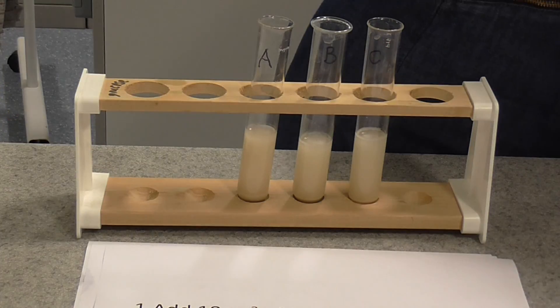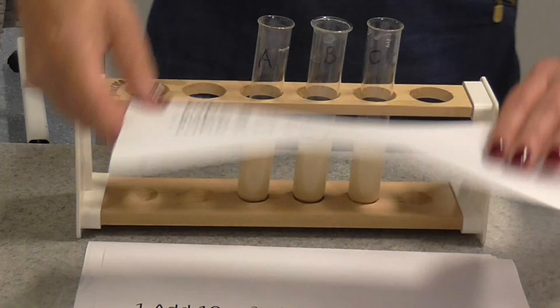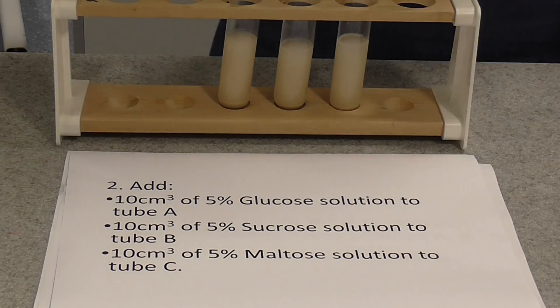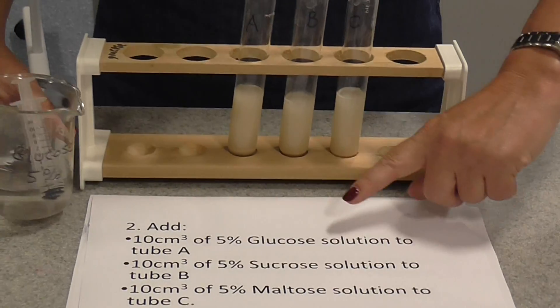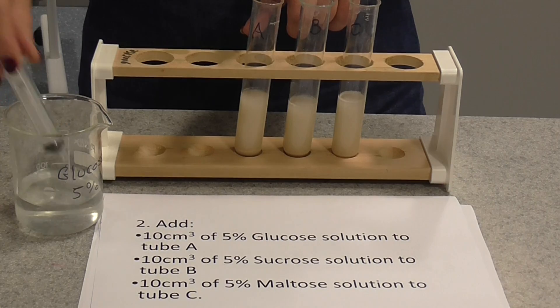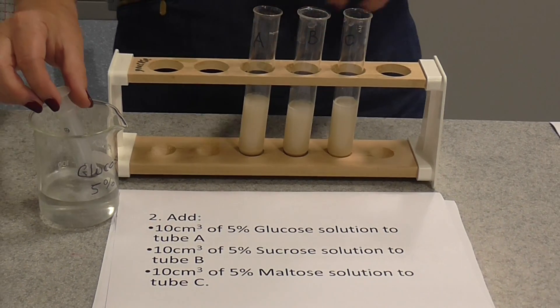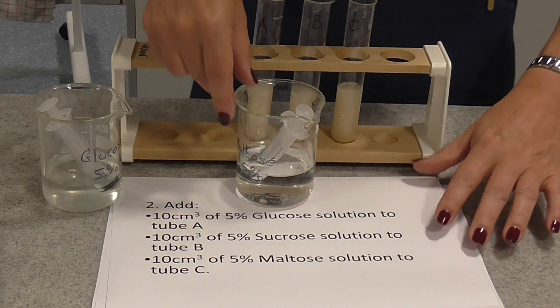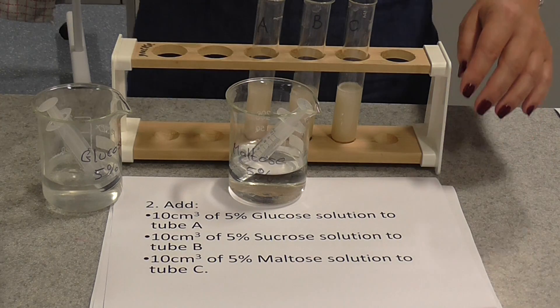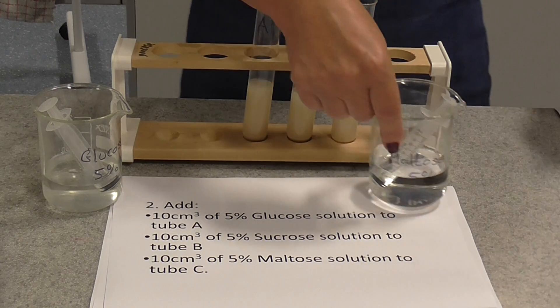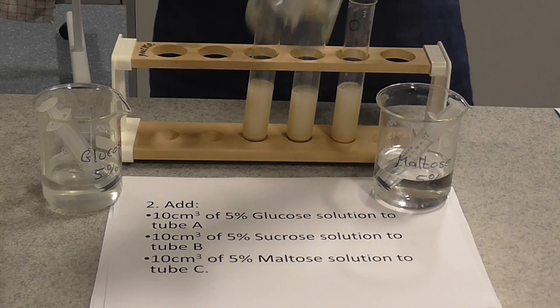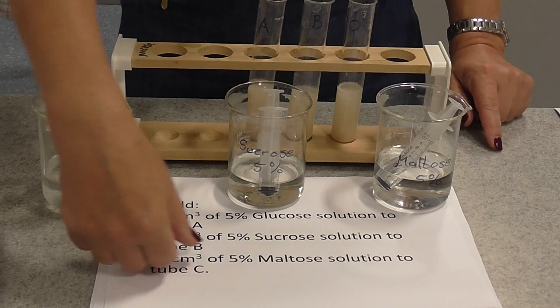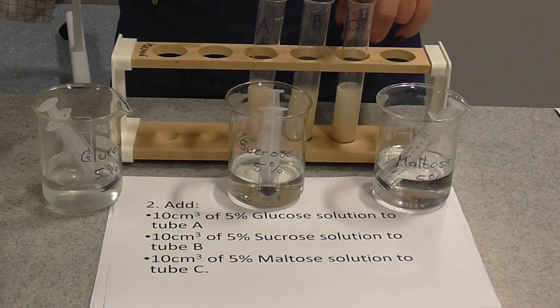The second step is to actually add the different sugar solutions to your yeast suspension. So to tube A, I'm going to add 10 centimeters cubed of 5% glucose solution, again using a syringe. To tube B, 10 centimeters cubed of 5% sucrose solution. And then 10 centimeters cubed of maltose solution to tube C.